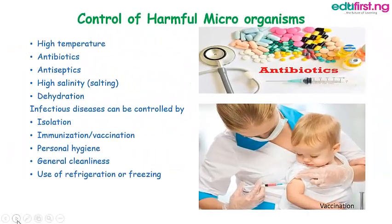Let's begin by discussing how we can control harmful microorganisms. Microorganisms which cause ill health could be controlled by the following methods. 1. High temperature. High temperature kills bacteria and their spores. So it is good to cook food with fire, and to boil and filter drinking water to kill germs.